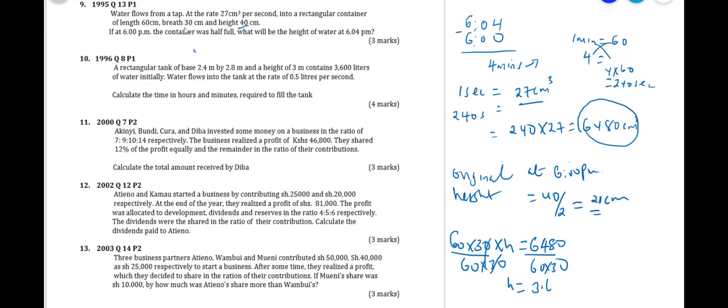The new height that was gained is 3.6 cm. So the original height, which is 20 cm, plus the new height that was gained, 3.6 cm, at 6:04pm the height of the container will be 23.6 cm.